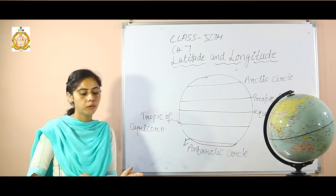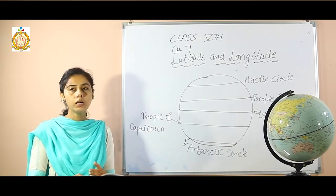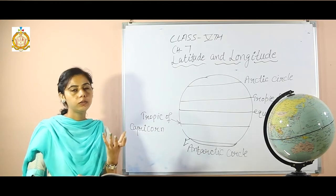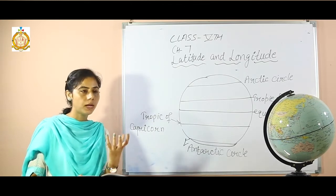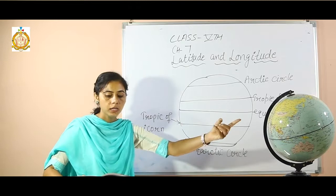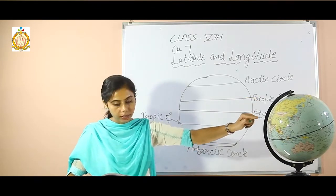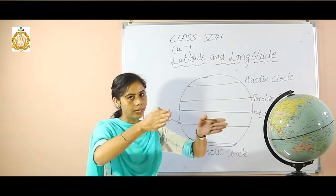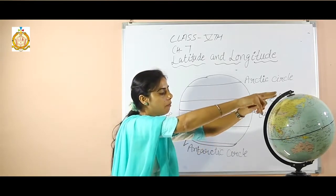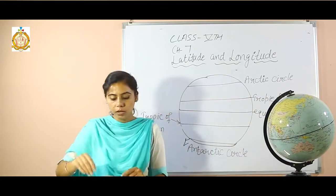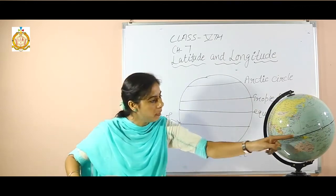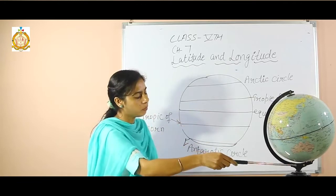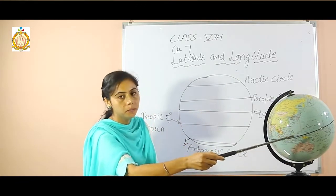Firstly I will start with the shape of earth. Our earth is spherical in shape. It is not a rod in shape but it is spherical in shape. It is slightly flattened at the north and south pole, and at the middle it is bulged.